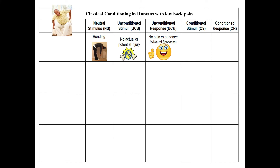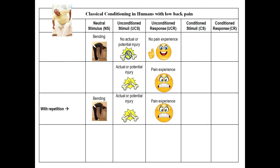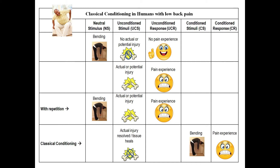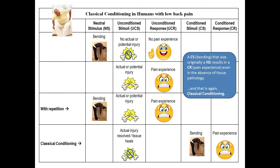Now let's talk about classical conditioning in humans with low back pain. The NS is bending forward, there's no injury and no pain experience, which is an NR. Then eventually you get an actual or potential injury in the back, and there's the pain experience, which is natural after an injury. With repetition of bending and the actual or potential injury, you get classical conditioning. Even when the actual injury is resolved and the tissue is healed after several weeks or months, bending or any movement still results in the pain experience — a CS that was originally an NS results in a CR, the pain experience, even in the absence of tissue pathology.